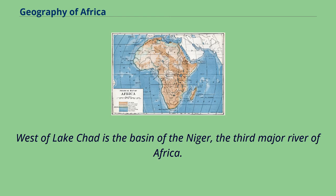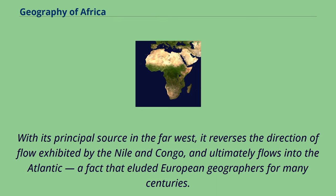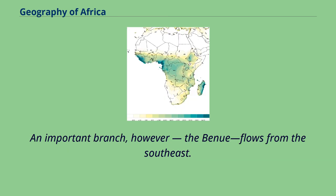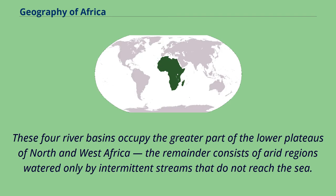West of Lake Chad is the basin of the Niger, the third major river of Africa. With its principal source in the far west, it reverses the direction of flow exhibited by the Nile and Congo, and ultimately flows into the Atlantic — a fact that eluded European geographers for many centuries. An important branch, however, the Benue, flows from the southeast. These four river basins occupy the greater part of the lower plateaus of North and West Africa, the remainder consisting of arid regions watered only by intermittent streams that do not reach the sea.